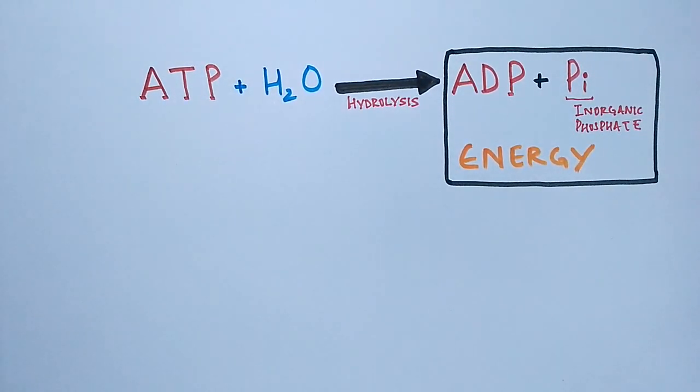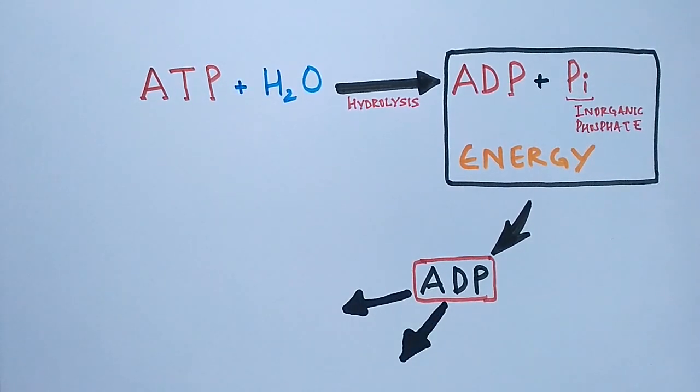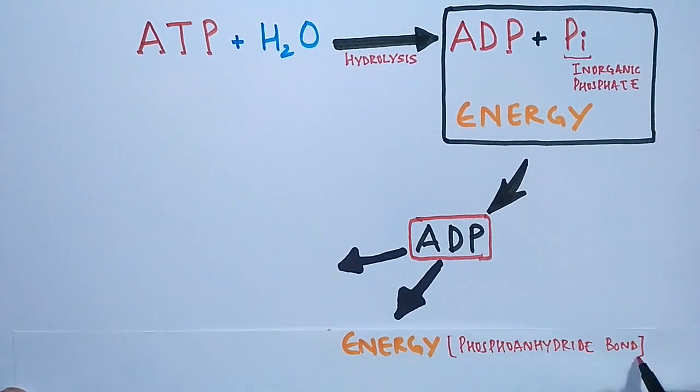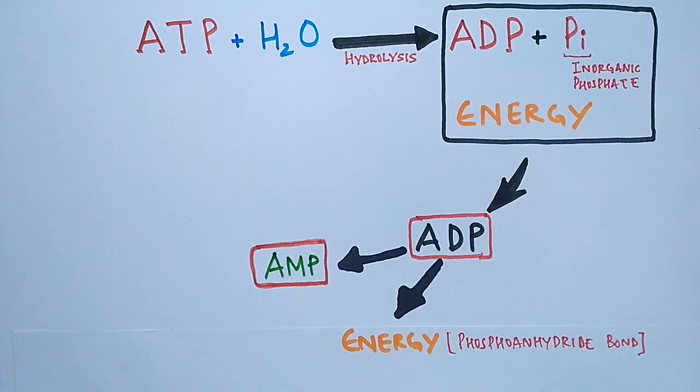If we go further, the ADP molecule is further hydrolyzed for its second phosphate, releasing the energy again. We get the AMP that time - that's adenosine monophosphate, as its beta and gamma phosphates have been removed.